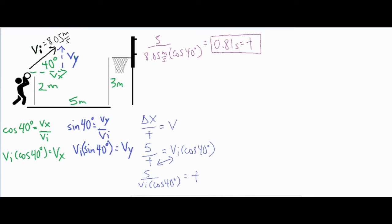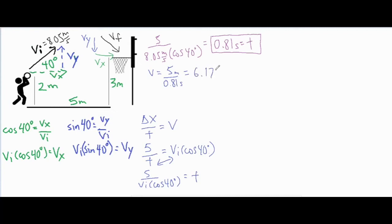Now we're going to find that final velocity going through the hoop — it will be going through at an angle. We'll find the horizontal component and the vertical component, then combine them using the Pythagorean theorem to solve for the final velocity. For Vx, the horizontal component, that's simple because horizontal motion is constant — there are no forces acting horizontally once the ball is released. Using delta x over t, that gives me 6.17 meters per second.